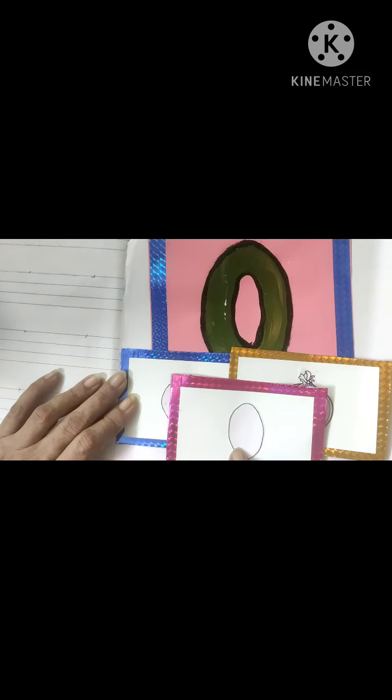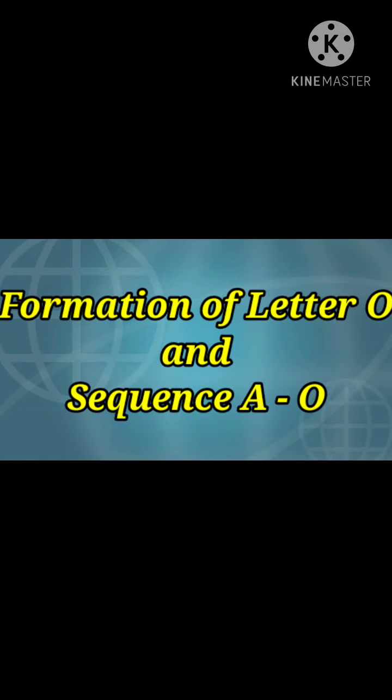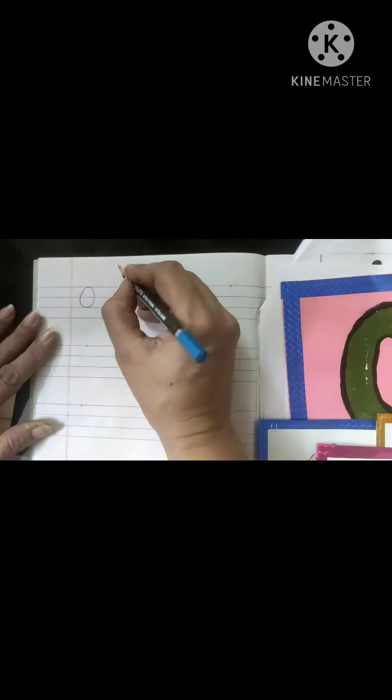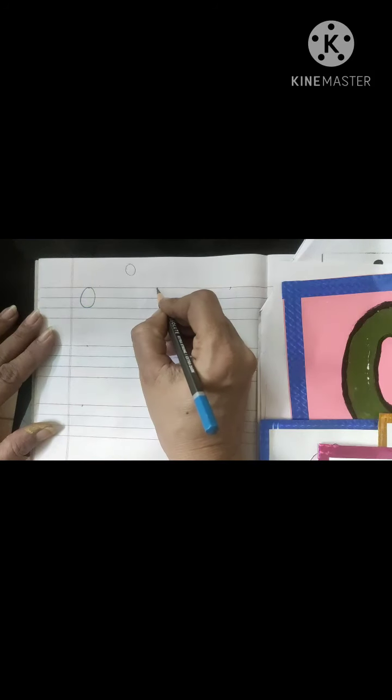So now I will tell you how to write letter O. It is very simple and it requires only one pattern and that pattern is of circle. Simple circle.